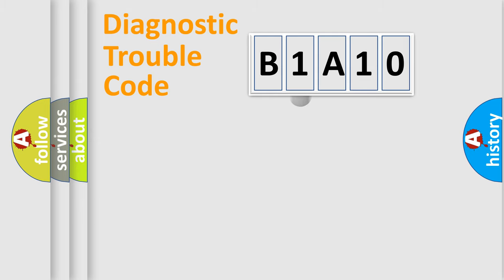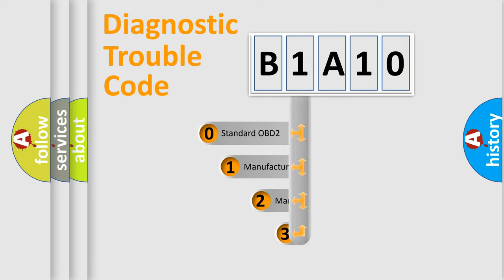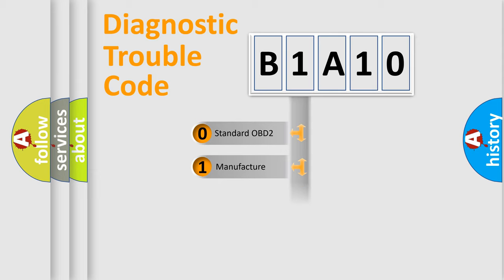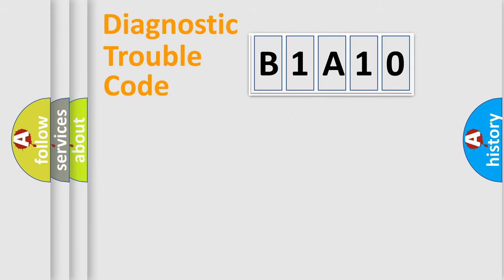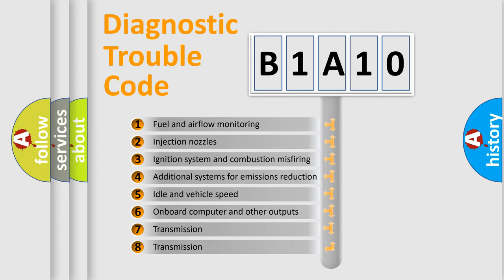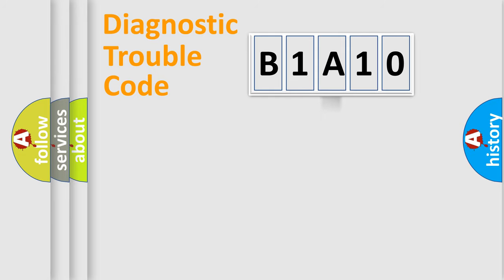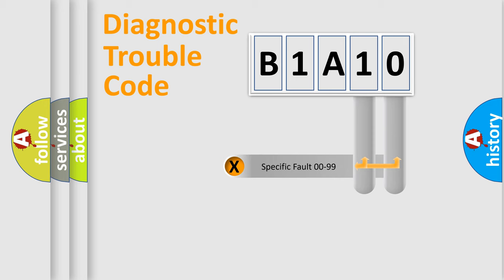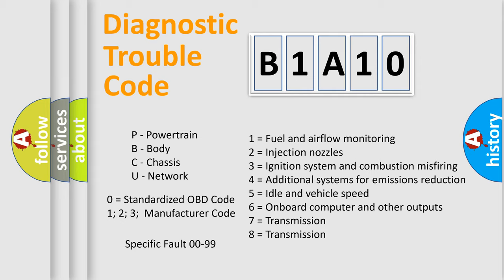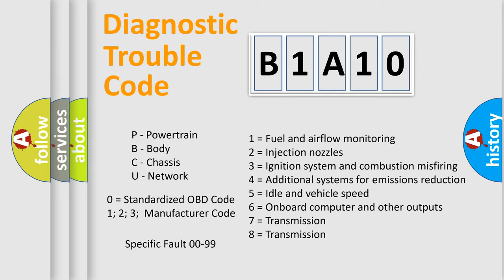This distribution is defined in the first character of the code. If the second character is expressed as zero, it is a standardized error. In the case of numbers 1, 2, or 3, it is a more manufacturer-specific expression of the car-specific error. The third character specifies a subset of errors. The distribution shown is valid only for the standardized DTC code, and only the last two characters define the specific fault of the group.